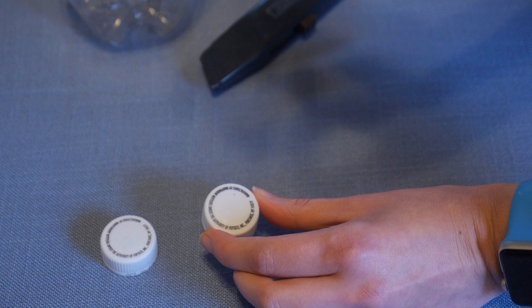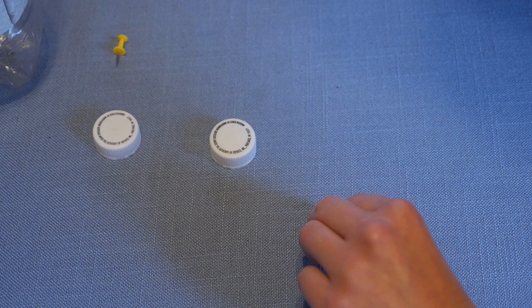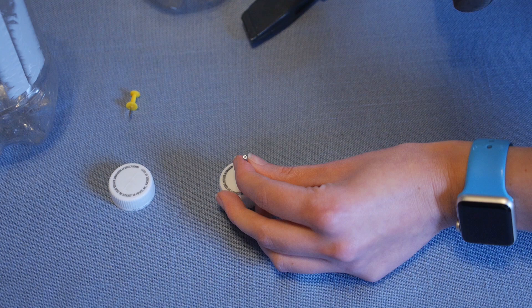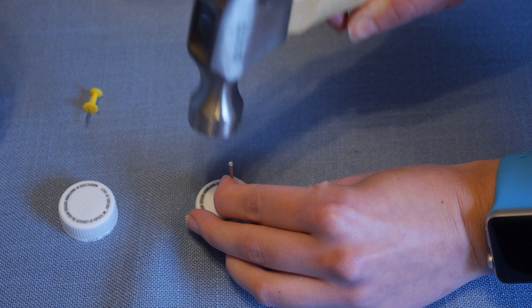The nail method is similar but requires less hand strength from you. You just want to put the nail down on the top, hold it firmly, and then tap it until it goes through the plastic like so. You'll just keep doing that until you've got a good number of holes in there. I'd say start with less and then add more if you need it.